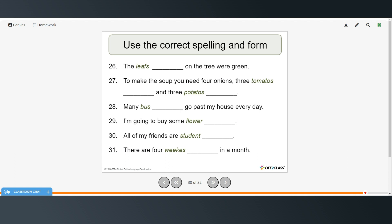Alright, so now use the correct spelling and form of the nouns that you see in green. Again, pause the video, try these on your own, and then restart when you're ready to see the answers. So here we would say the leaves on the tree were green. To make the soup, you need four onions, three tomatoes, and three potatoes. Many buses go past my house every day. I'm going to buy some flowers. All of my friends are students. And there are four weeks in a month.